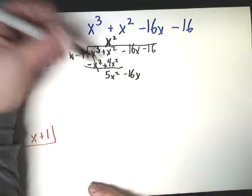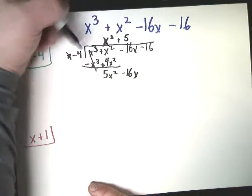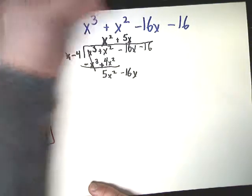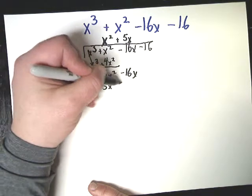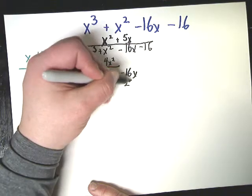I multiply by 5 to get it to do this, so plus 5. And then to get the x to go up, I need to multiply by the x as well. So I end up with 5x squared minus 20x.